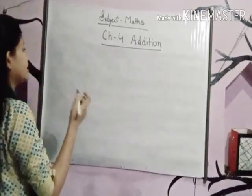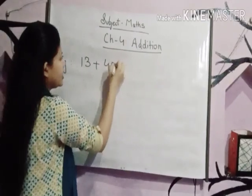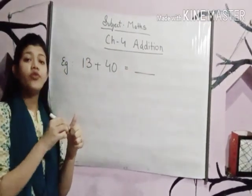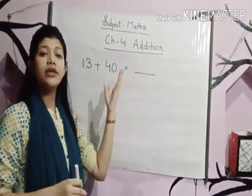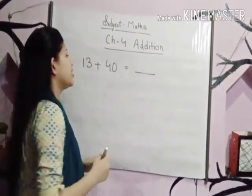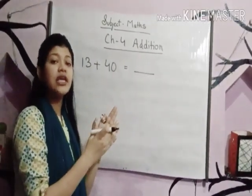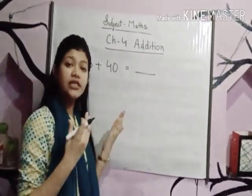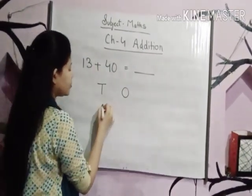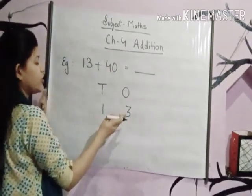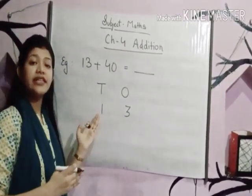Let's take some examples. 14 plus 40. So what we are doing here? We are adding these two numbers to find the sum. Now students, first we will learn how to arrange these numbers under the column of 1s and 10s. So 10s, 1s — first number 13, where 3 will be placed at the 1s place and 1 will be placed at the 10s place.